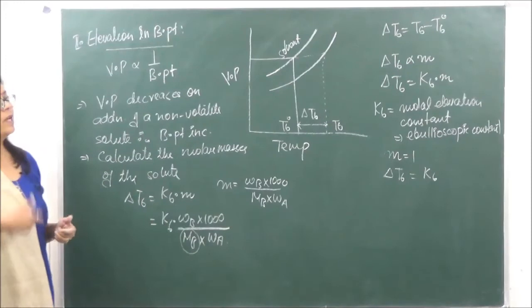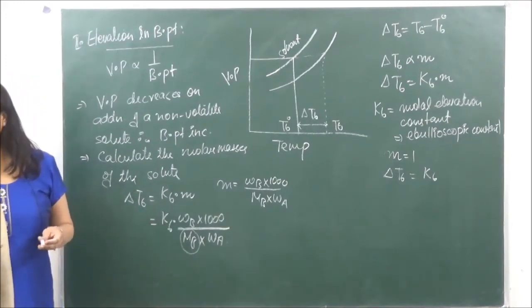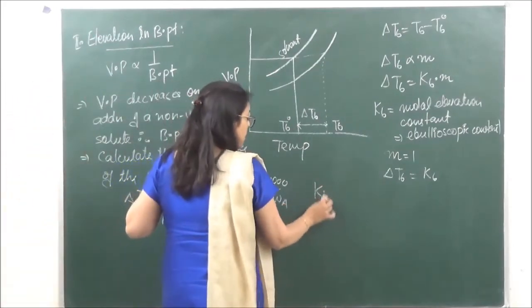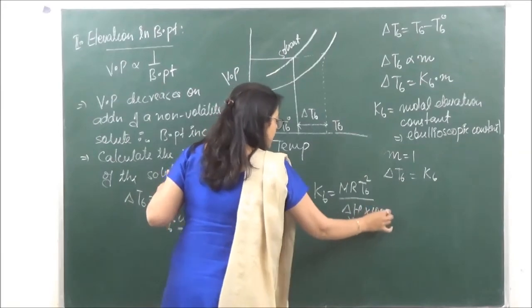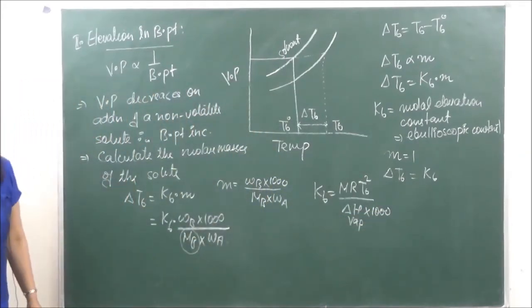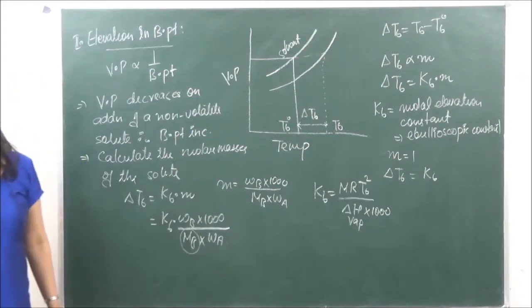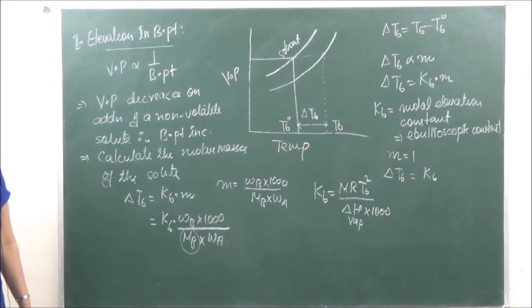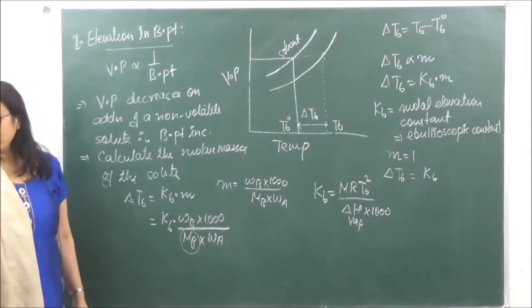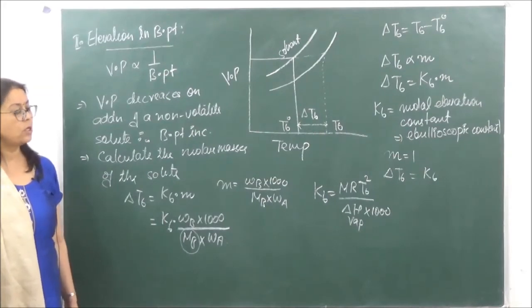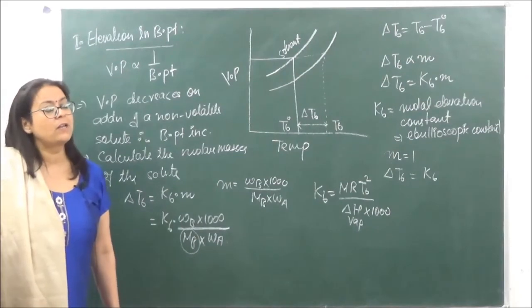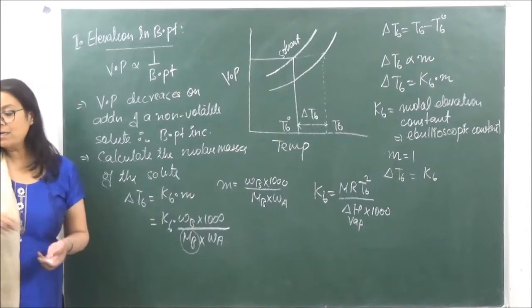For competition-level questions, if Kb is not directly given but heat of vaporization and other data are provided, use the formula: Kb = M × R × Tb² / (delta H vaporization × 1000), where R = 8.314 J/K, M is the molar mass of the solvent (e.g., 18 for water), Tb is the boiling point of the solvent, and delta H vaporization is the enthalpy of vaporization.